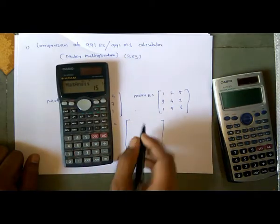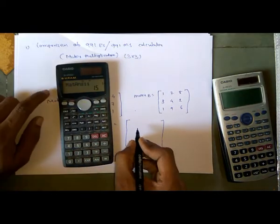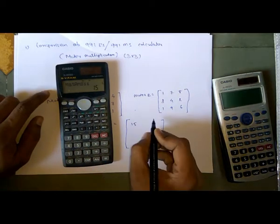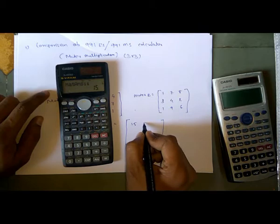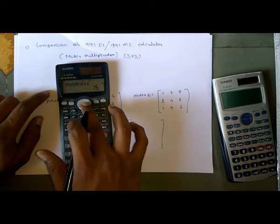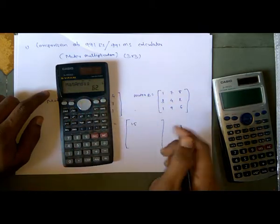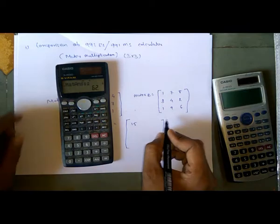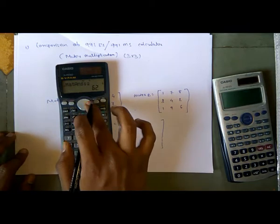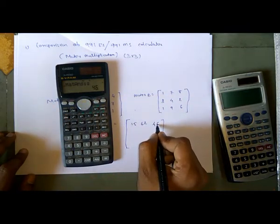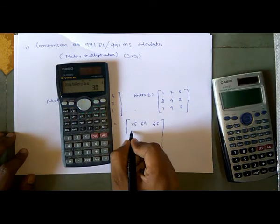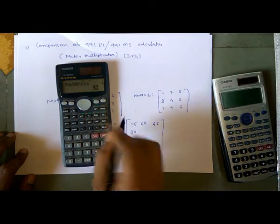We get the final answer. The elements are: A11 = 15, then pressing through the results: 62, 46, 30. We can navigate through each result element by pressing the arrow key.